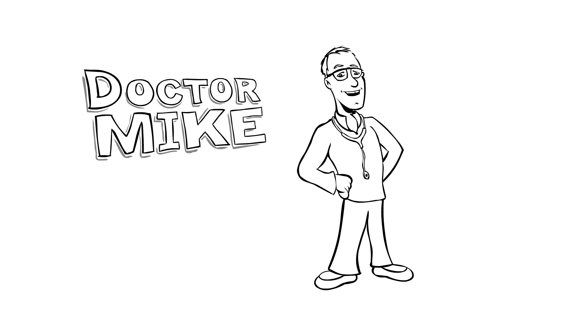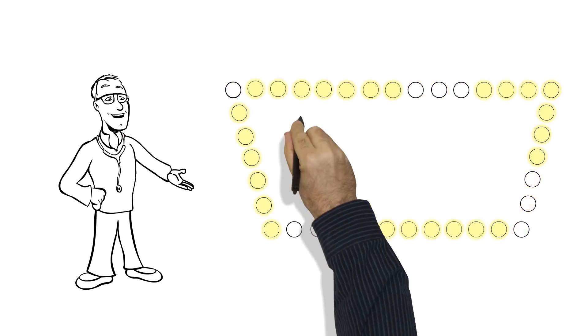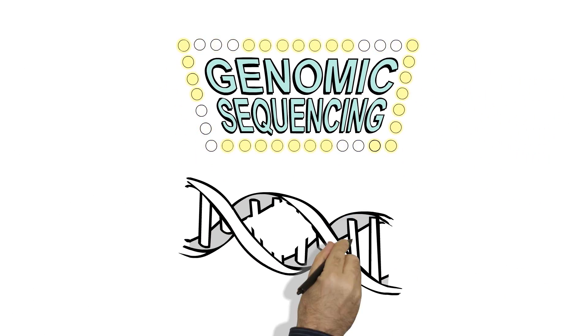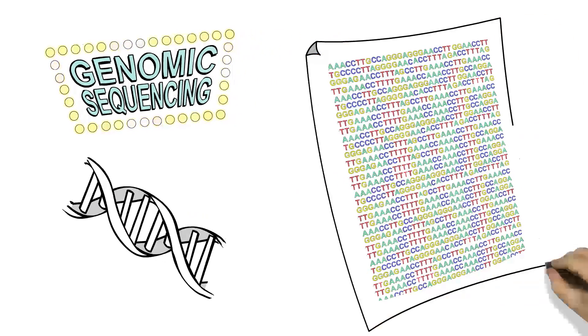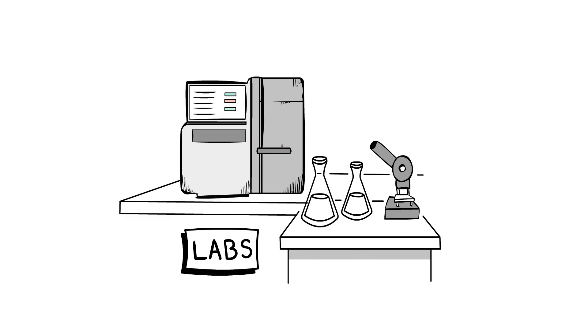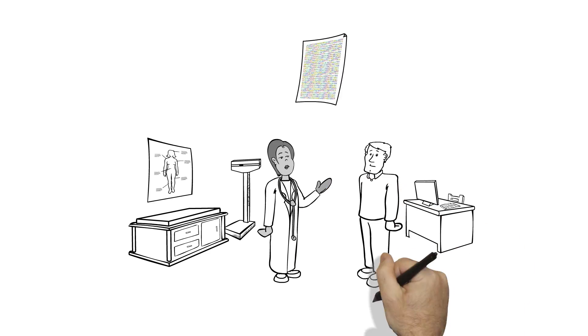Hi, I'm Dr. Mike Evans. There's a new kind of powerful test in town, and it's called genomic sequencing, where we don't just map one gene, but your whole genetic code. Genomic sequencing is evolving quickly. Its use is still uncommon in the clinic, but this is starting to change.